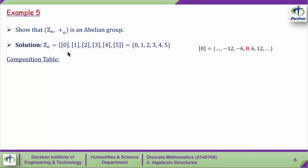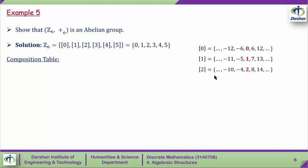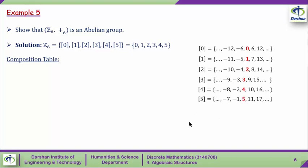First, let's see what each class represents. Class [0] is the set of integers {0, 6, 12, -6, -12, ...}. Class [1] is the set {1, 7, 13, -5, -11, ...}. Similarly, we define classes [2], [3], [4], and [5]. Now we construct the composition table, writing the binary operation addition modulo 6 along the top and left, and the elements of Z6 on both axes.